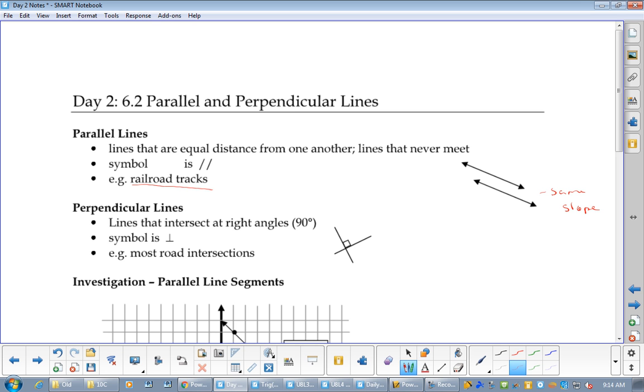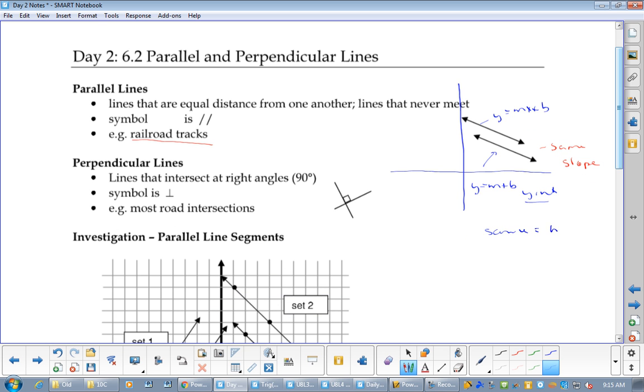What is different about them? Yes, they would have different points. I'm going to get more specific. Well, these go on forever in both directions because they have arrows, right? But what if I put a graph here? Now what would be different about them? Which one? The y-intercept. So the equation for this would be y equals mx plus b. The equation for this would be y equals mx plus b. What would be the same? Same would be m.